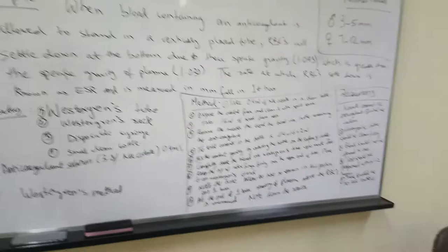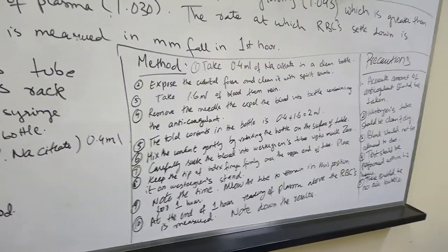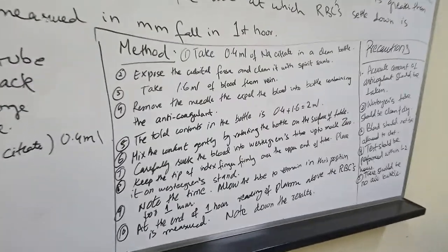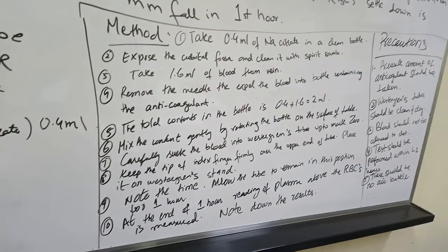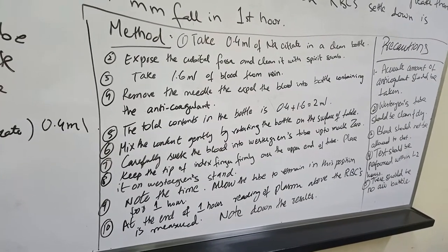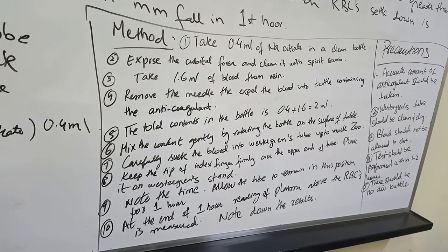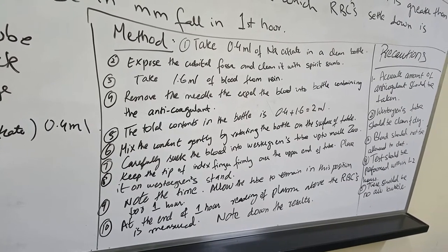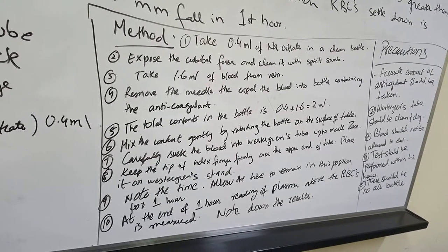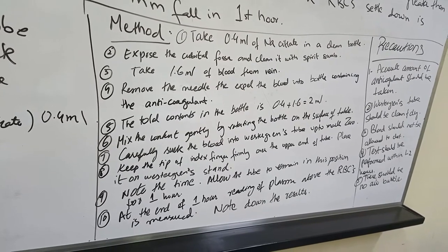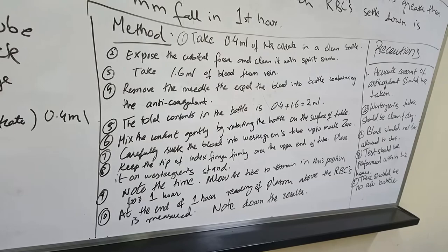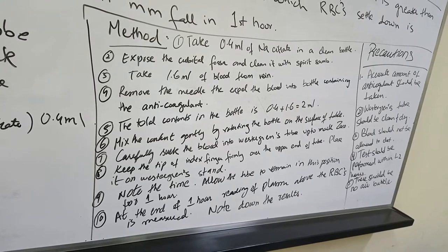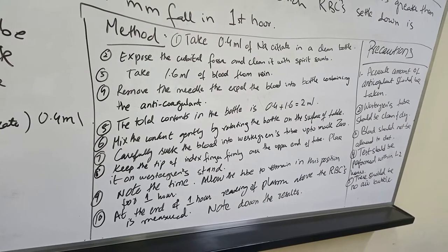First, we take 0.4 ml of sodium citrate solution in a clean bottle. Then we expose the cubital fossa, clean it with a spirit swab, and allow it to dry. We then take 1.6 ml of blood from the vein, remove the needle, and expel the blood into the bottle containing the anticoagulant solution. The total content in the bottle is 0.4 ml of anticoagulant and 1.6 ml of blood, equaling 2 ml. We then mix the contents gently by rotating the bottle on the surface of the table.